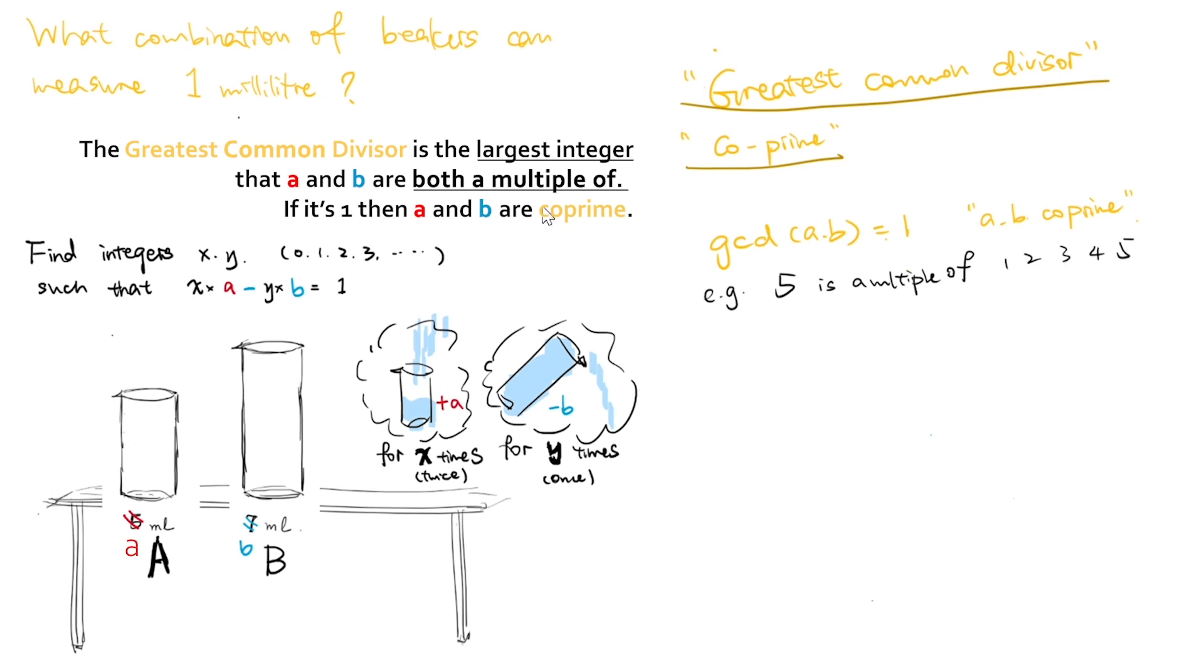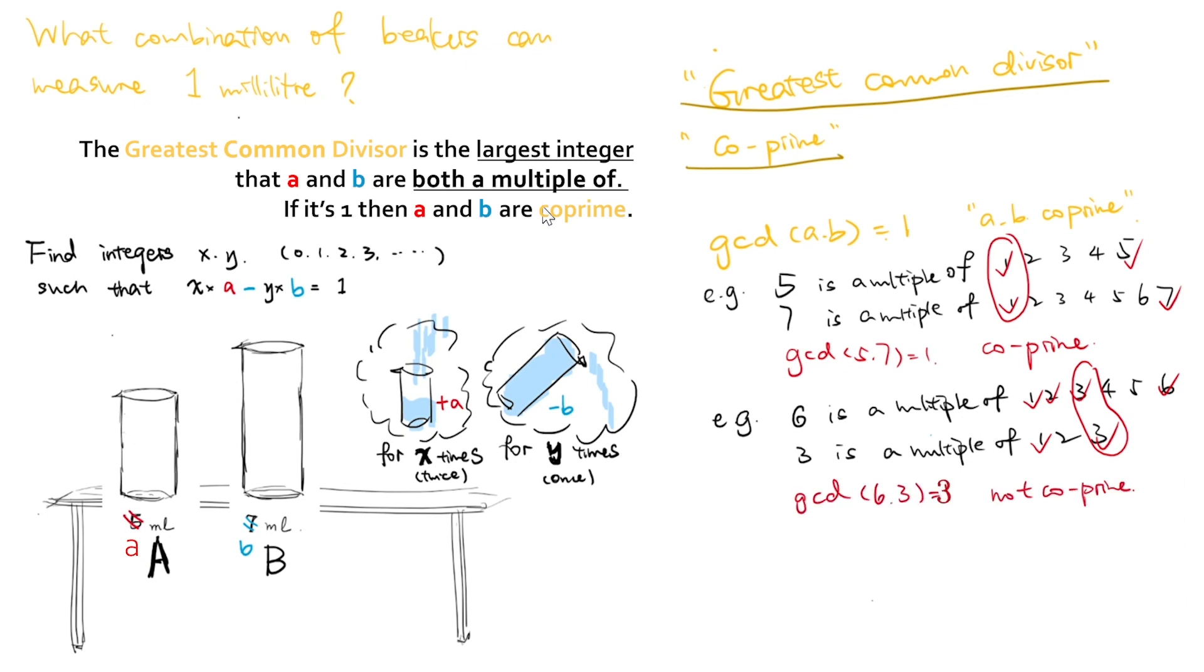For example, 5 is a multiple of 1 and 5, and 7 is a multiple of 1 and 7. The largest positive integer that 5 and 7 are both a multiple of is 1, so the greatest common divisor of 5 and 7 is 1. 5 and 7 are thus co-prime. Another example, 6 is a multiple of 1, 2, 3, and 6, and 3 is a multiple of 1 and 3. The largest positive integer that 6 and 3 are both a multiple of is 3. The greatest common divisor of 6 and 3 is 3. 6 and 3 are thus not co-prime.